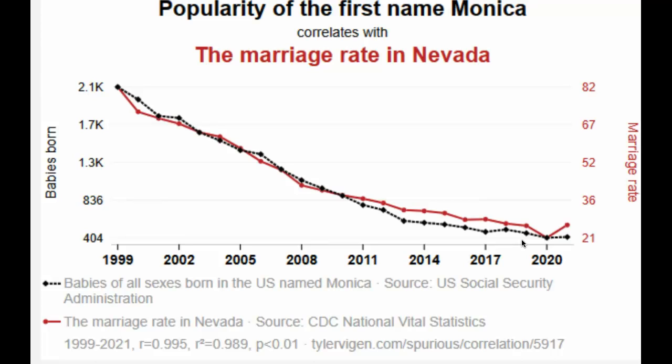Negative correlation means it flip-flops: one variable goes down, the other one goes up; one variable goes up, the other one goes down. This was just an example of a spurious correlation. It's really important to think about whether there is actually a meaningful correlation, or whether it's just a spurious correlation.